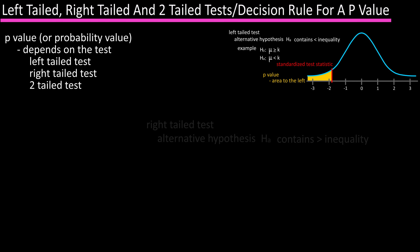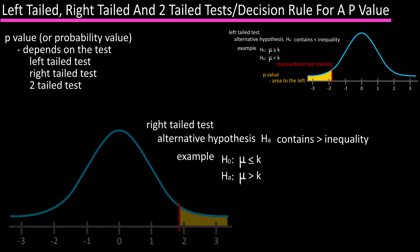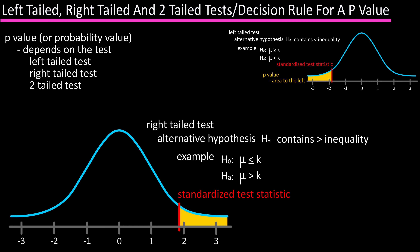A right-tailed test is basically the opposite of a left-tailed test, where the alternative hypothesis contains the greater-than inequality. For instance, for H sub 0: mu is less than or equal to k, and H sub A is mu is greater than k. On the graph, the red line represents the standardized test statistic, and the area to the right of the line is the p-value.